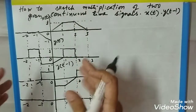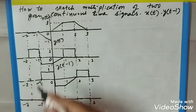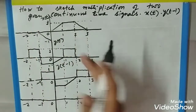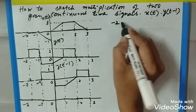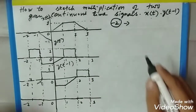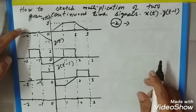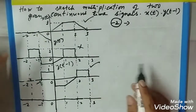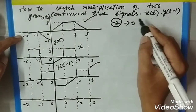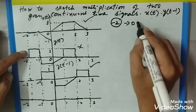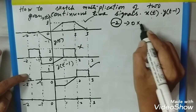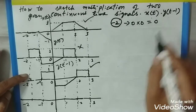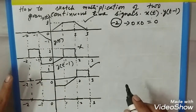Now you need to manipulate this signal and find the product of these two signals. To find the product, let us analyze the time values. First, we take the position at minus 2. What are the values we are getting from x(t) and y(t-1)? At minus 2, x(t) is 0 and y(t-1) is also 0. Zero into 0 is 0 at the minus 2 position, so the answer is 0.